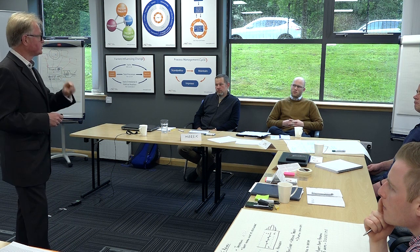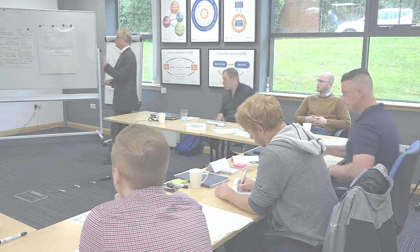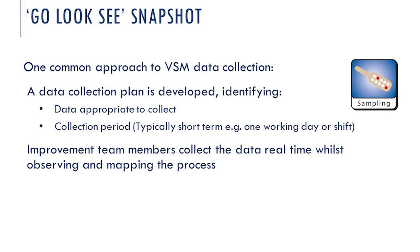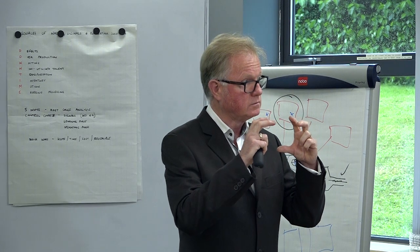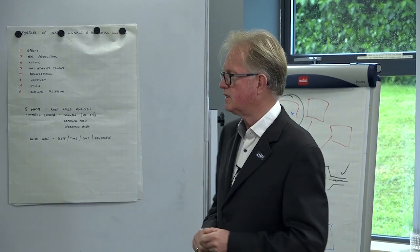So when generating data, we need a plan for the type of data we want and how we'll go about generating it. Do we need 15, 20, or 30 pieces of data? Are we looking for an average or the spread? We must have a plan. The data needs to be appropriate to collect and you need a consistent method. The collection period for a value stream map is normally a snapshot — a quick photograph of what's going on — so it tends to be a relatively short period, maybe an hour or two.